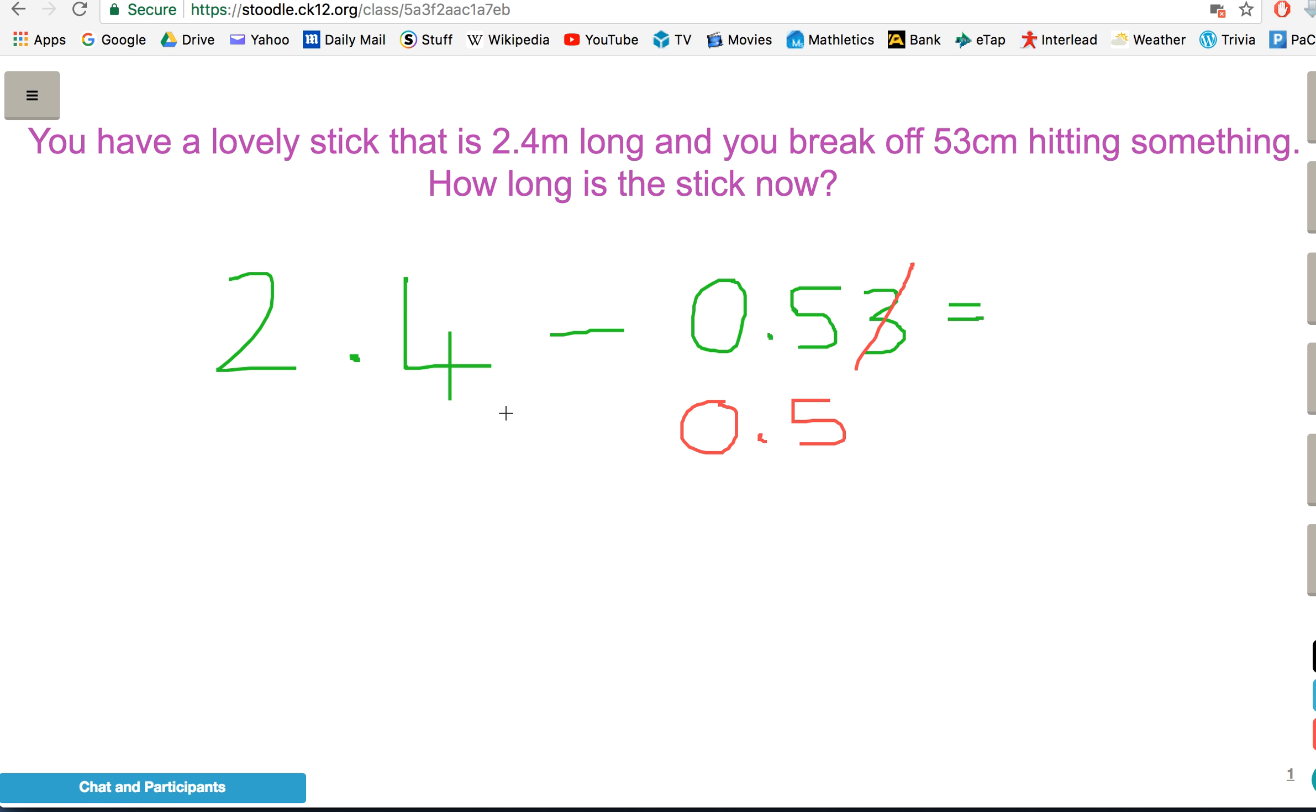Now, over on this side, we haven't got any hundredths, or no obvious amount of hundredths, because it just goes four-tenths and no hundredths. So, what I'm going to do, to make it easy for you, I'm going to write in how many hundredths we've got there. That's none.